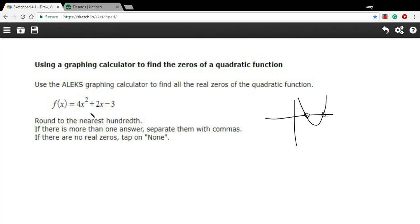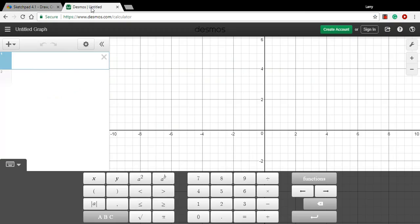So using a graphing calculator for this should be pretty easy. We don't have to fool around with factoring or anything like that. So I've got 4x squared plus 2x minus 3, and I'm going to pop into this graphing calculator.